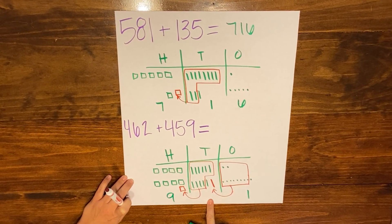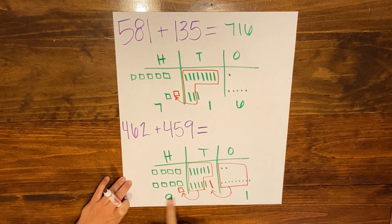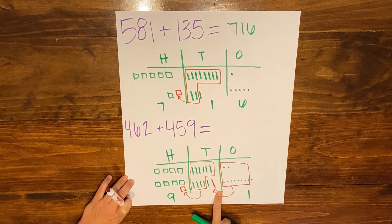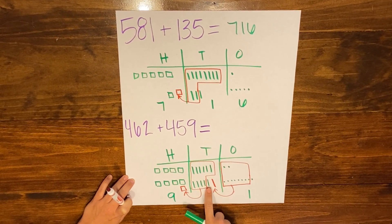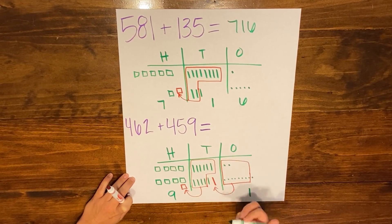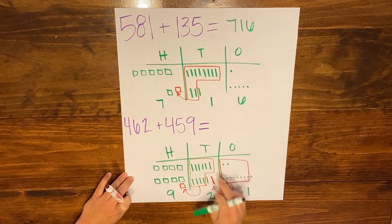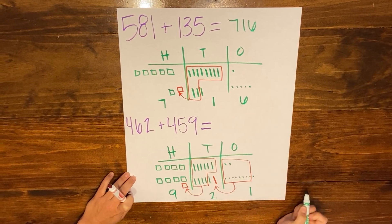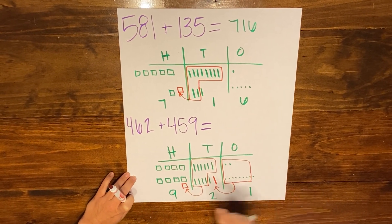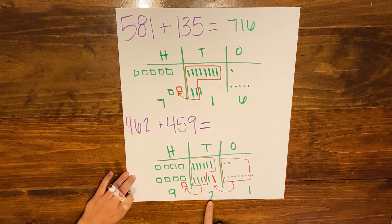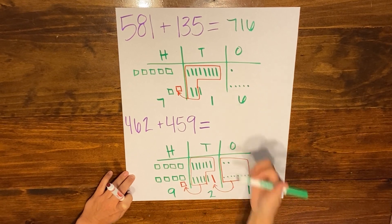I need to go back and look at my tens. The hundreds total is nine, but I forgot to count up my tens — I have two tens left. So my sum is nine hundred twenty-one.